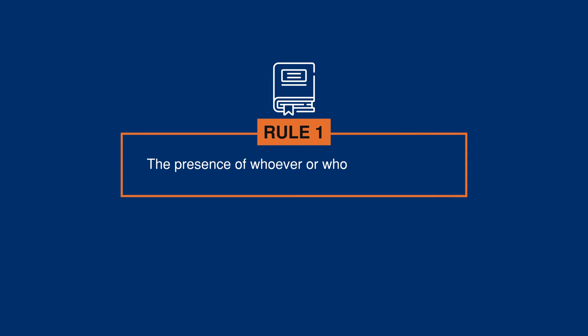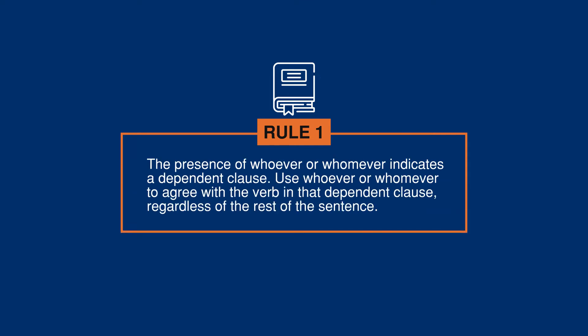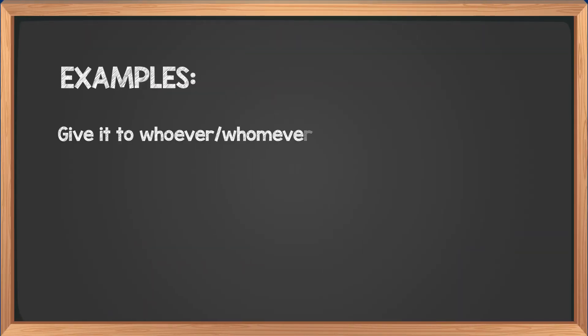Rule one: the presence of whoever or whomever indicates a dependent clause. Use whoever or whomever to agree with the verb in that dependent clause, regardless of the rest of the sentence. Example: Give it to whoever asks for it first. They ask for it first — therefore, whoever is correct.